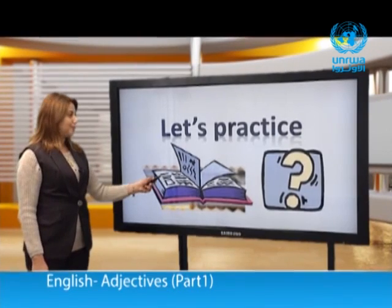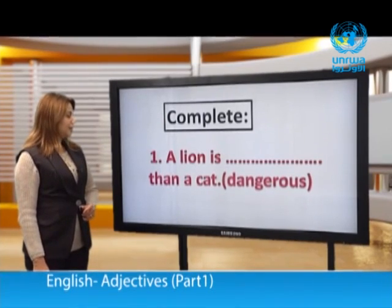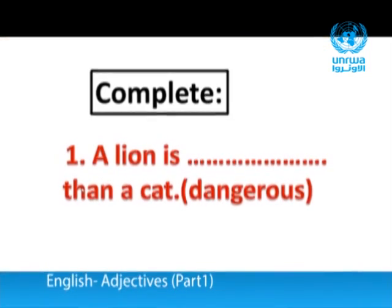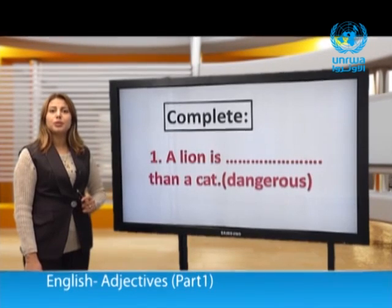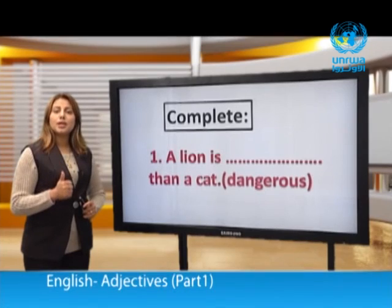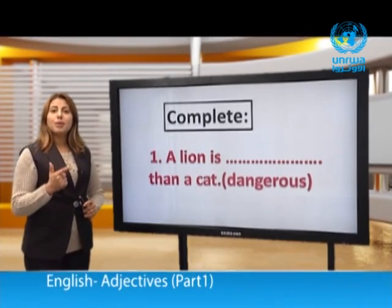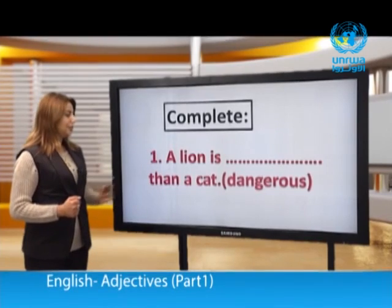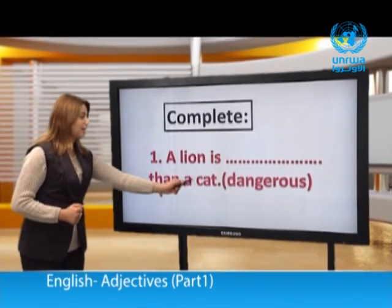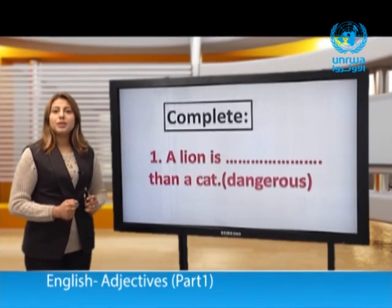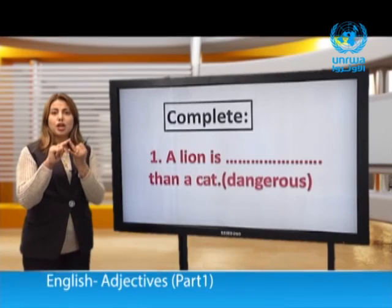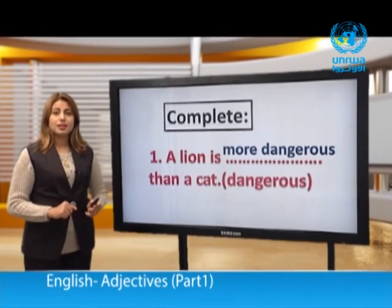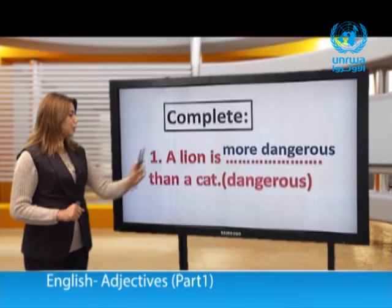Let's practice. Complete. Number one: 'A lion is ___ than a cat,' using the adjective 'dangerous.' The word 'than' tells us this is comparative. 'Dangerous' is a long adjective — three syllables. So the answer is: 'A lion is more dangerous than a cat.'